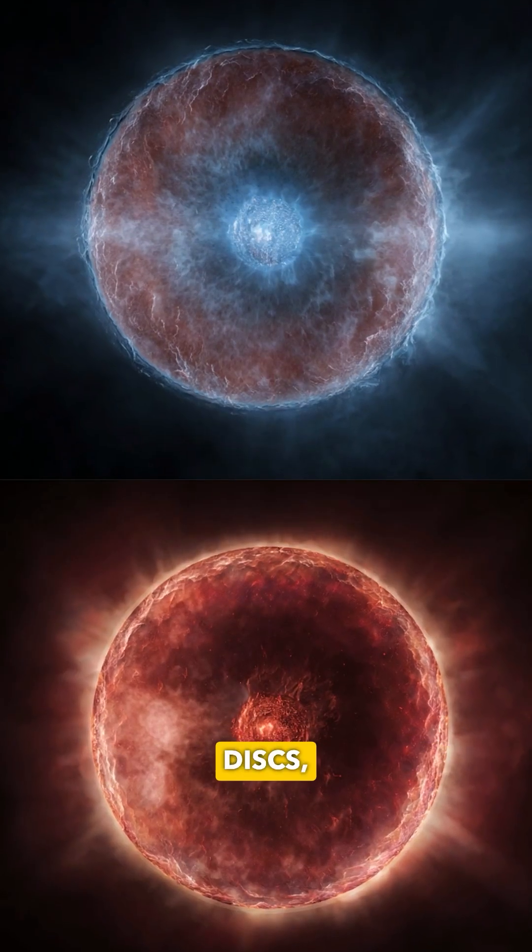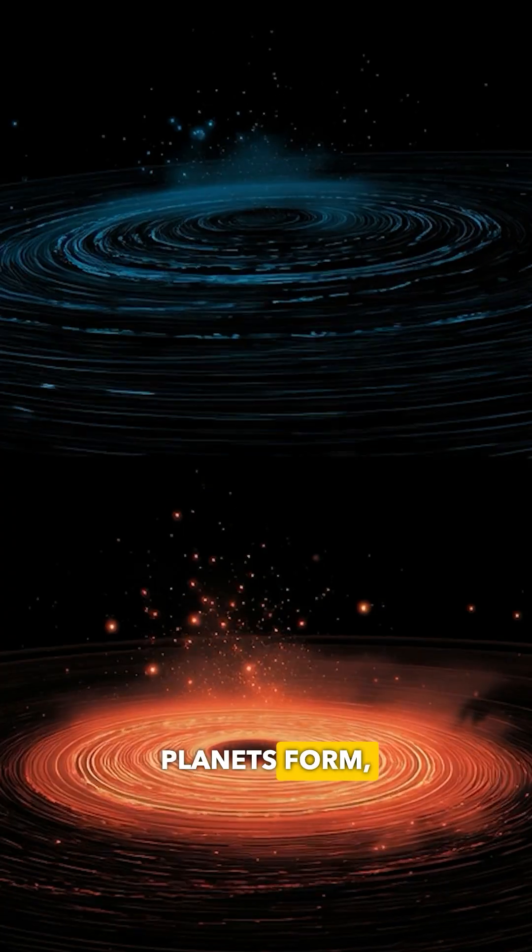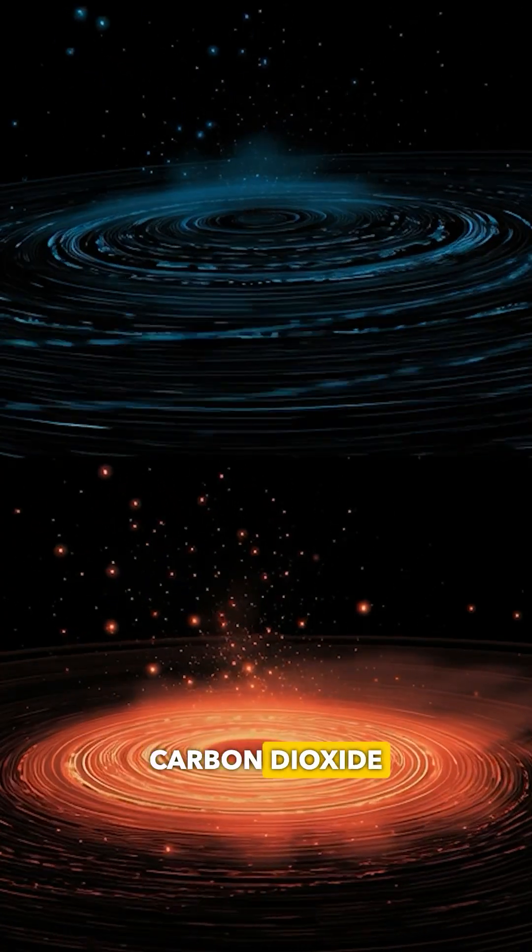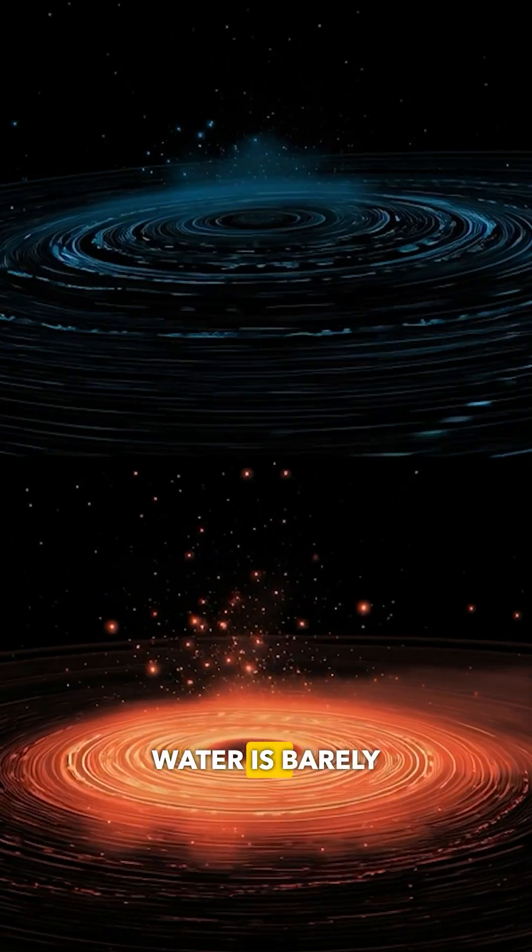In most planet-forming disks, water vapor dominates where Earth-like planets form. But this disk is flooded with carbon dioxide instead, while most of the water is barely detectable.